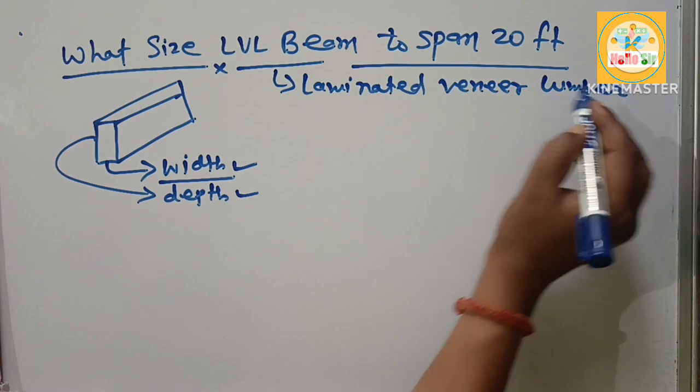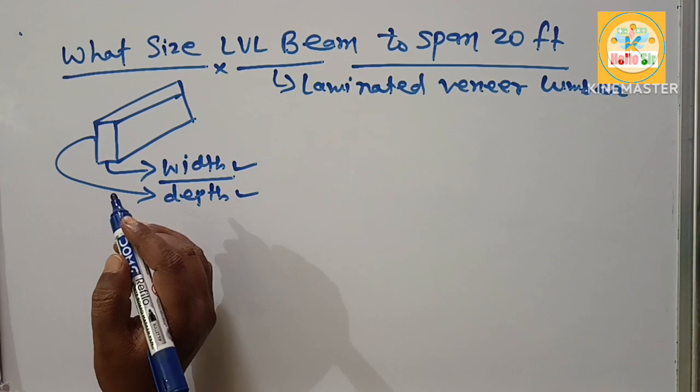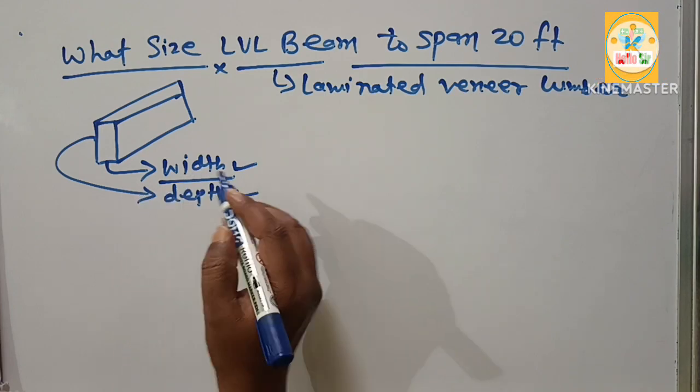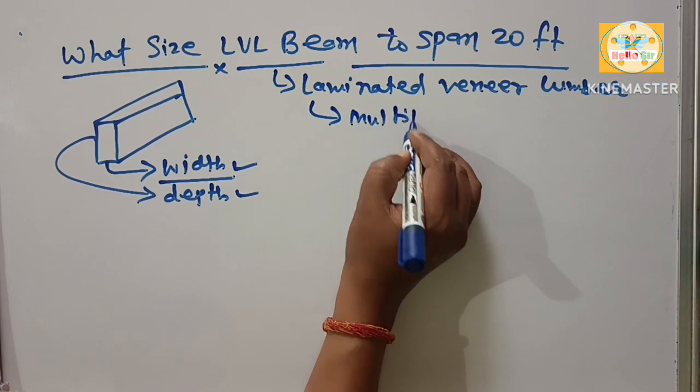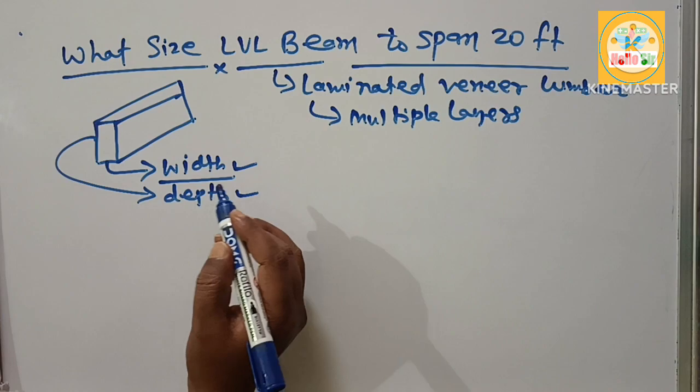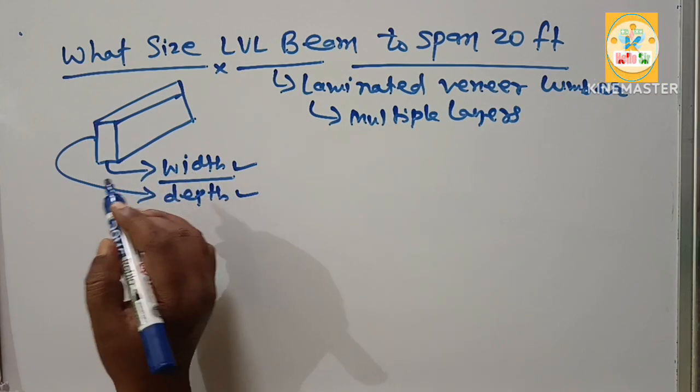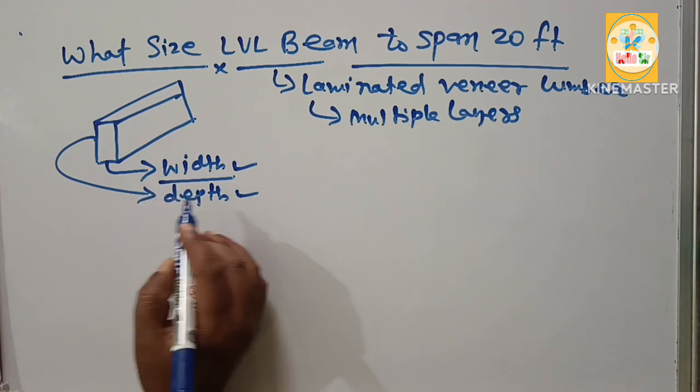It is an engineered wood product made of multiple layers of thin wood assembled together with adhesive, multiple layers. And you have to find out the correct LVL beam size needed to span 20 feet.